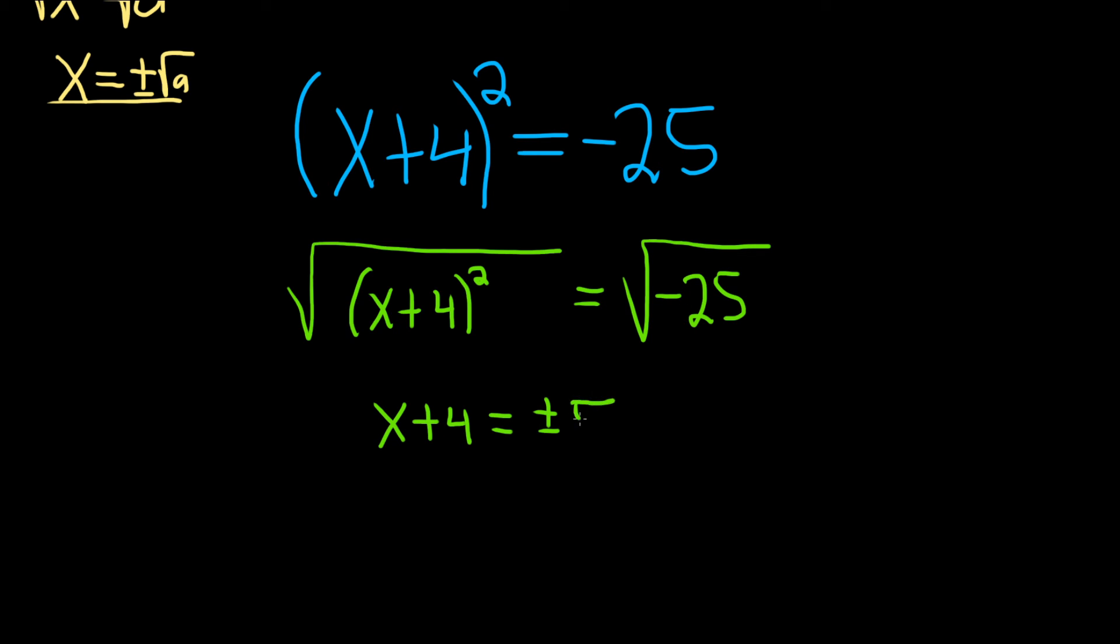So we get plus or minus 5i. We're almost done. The last thing to do is get rid of this 4. It's being added to the left hand side so to undo that we'll use subtraction. So minus 4 minus 4.